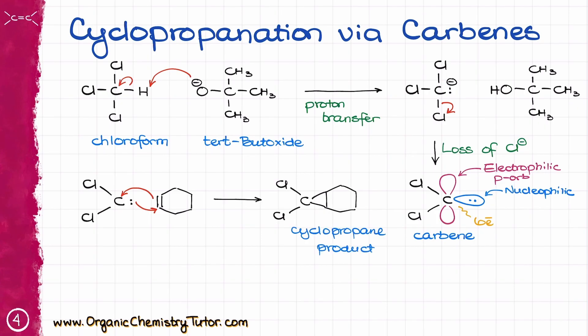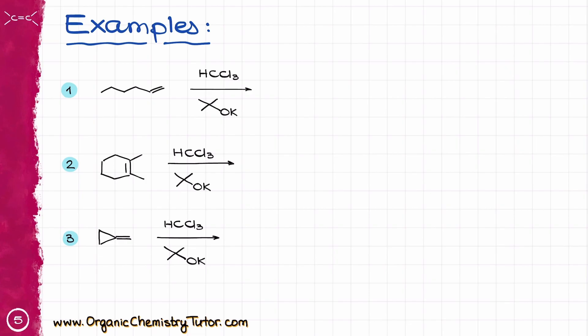This cyclopropane has a couple of chlorine atoms sitting on it, so those might come in handy later on when we decide to do more chemistry with our product, depending on what you want to do with that, of course. So, let's check out these few examples here.